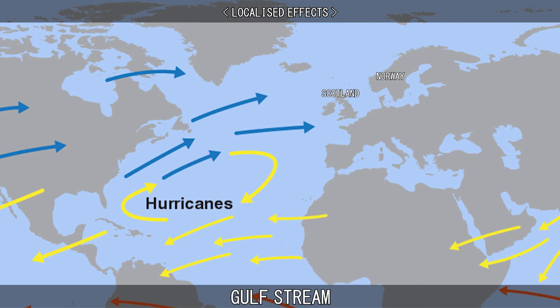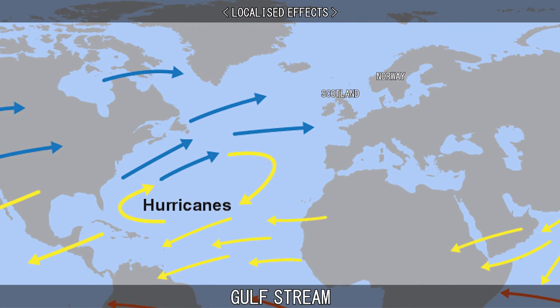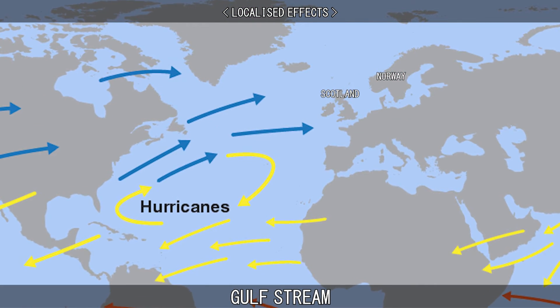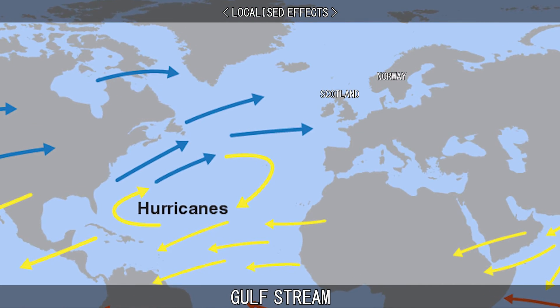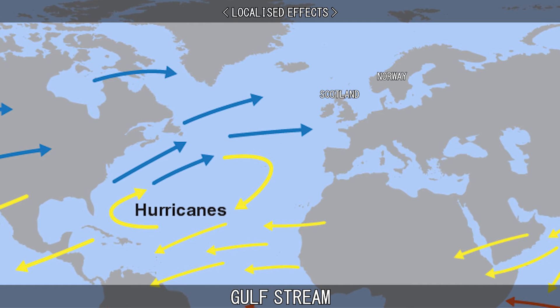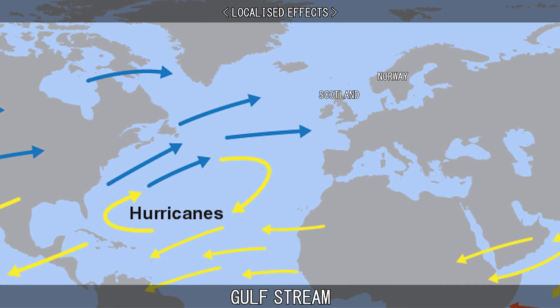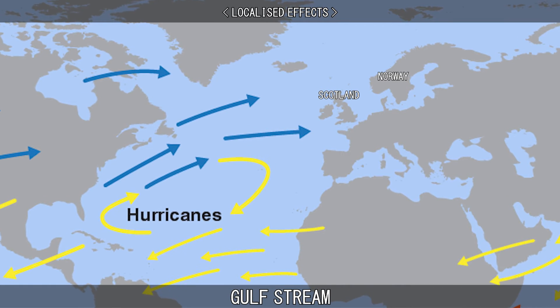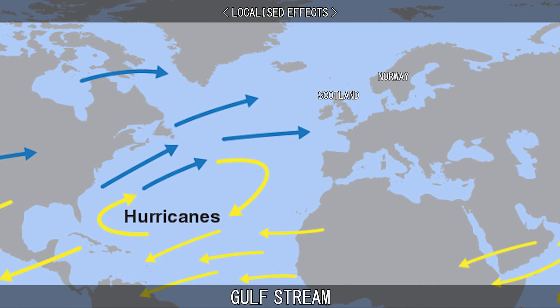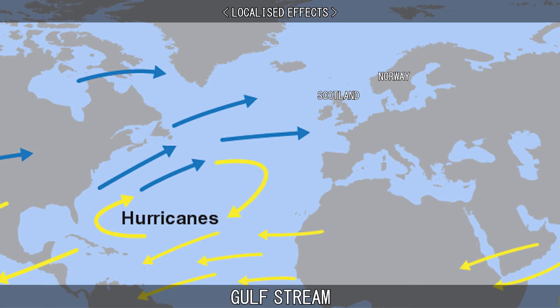The warm water of the Gulf Stream also produces strong westerly winds in Scotland and pushes warm water to the Norwegian coast, keeping it free of ice and snow throughout the year.